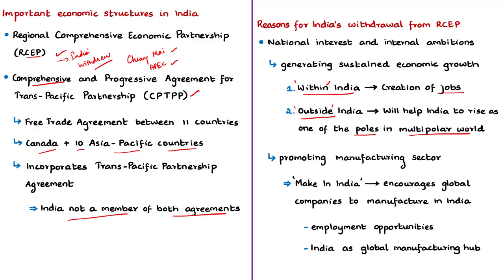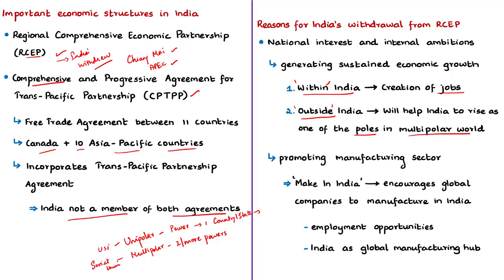Unipolarity in international politics means the distribution of power in which there is one state with most of the cultural, economic and military influence. Whereas multipolarity means the distribution of power in which more than two nation states have nearly equal amounts of military, cultural and economic influence. When the Soviet Union existed, it was a multipolar world. After that, it became a unipolar world with the USA as the main pole. Now again, multipolarity is rising in the world with China, India and other countries in the picture.